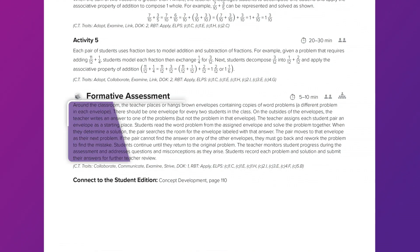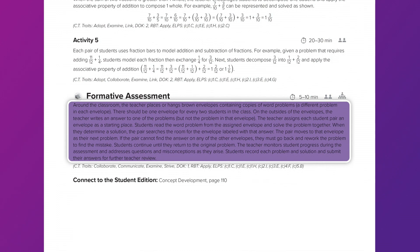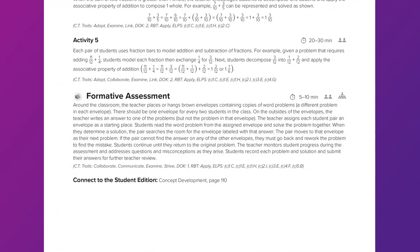In this unit, the teacher is instructed to place brown envelopes containing copies of different word problems in each one around the classroom. There should be one envelope for every two students in the class. On the outside of the envelope, the teacher writes an answer to one of the problems, but not the problem in the envelope. The teacher assigns each student pair an envelope as a starting place.